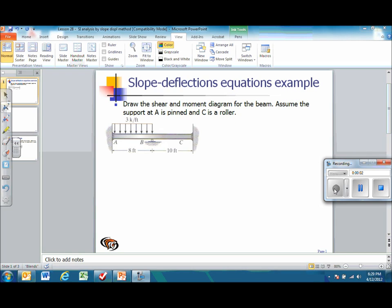We're going to solve a statically indeterminate beam using the slope deflection equations method, which is found in chapter 11 of Hibbeler.